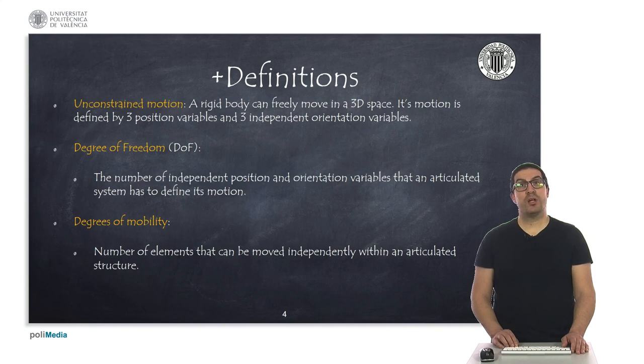Two widely used concepts are the degrees of freedom and mobility of an articulated system. The degrees of freedom are the numbers of position and orientation variables that define the motion of an articulated system. While the degrees of mobility are the numbers of elements that can move independently, usually referred as the number of motors of a robotic system.